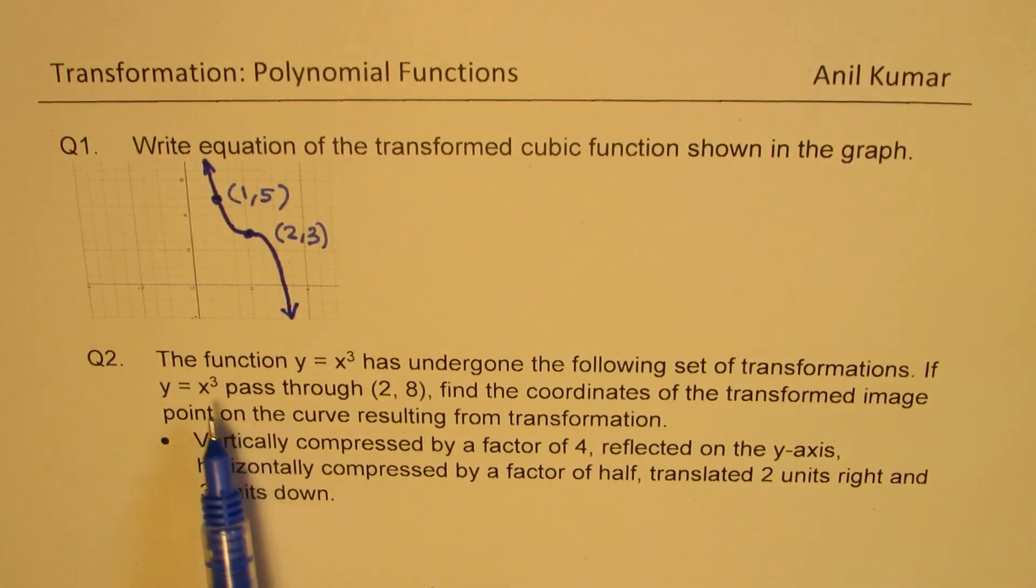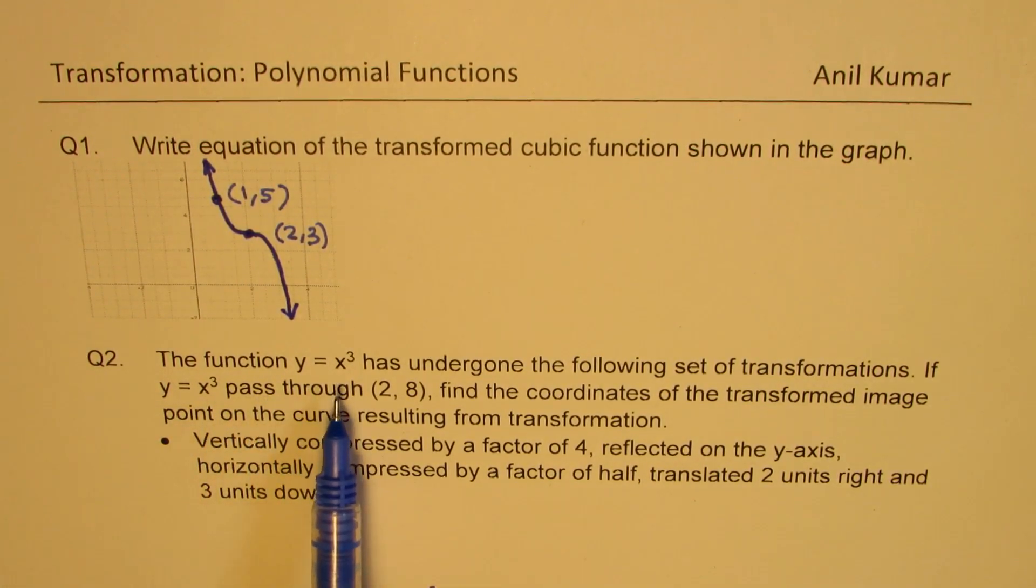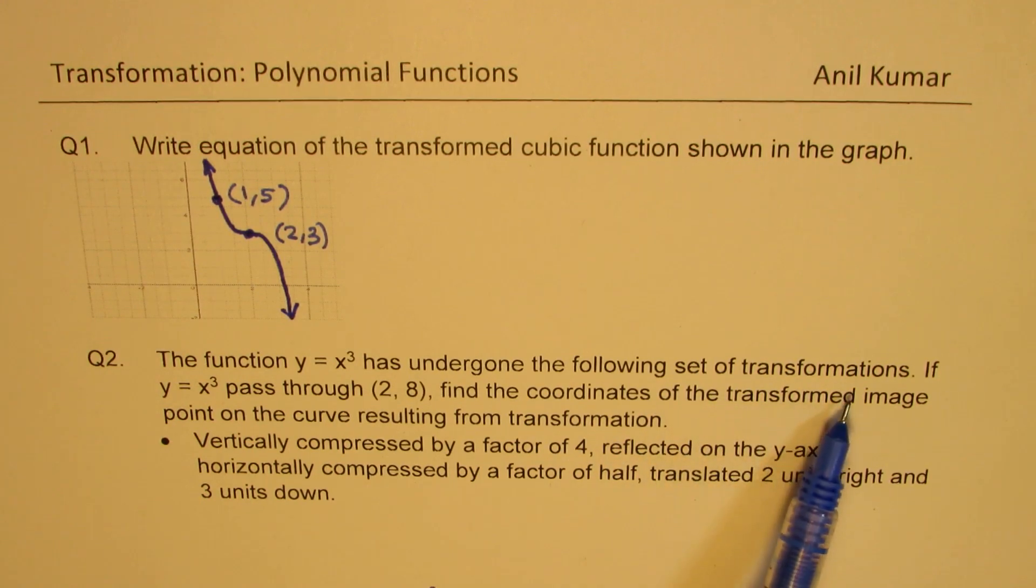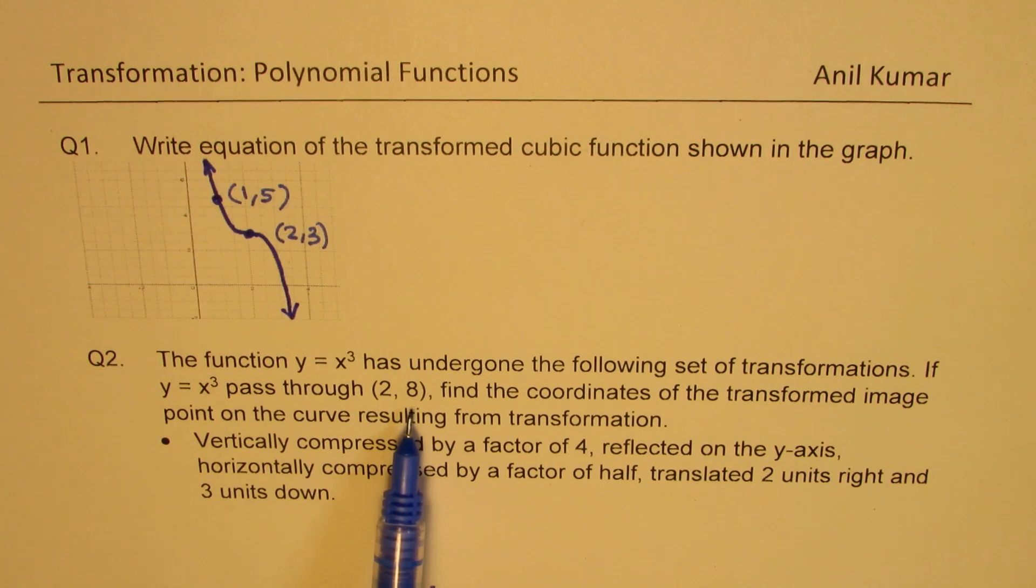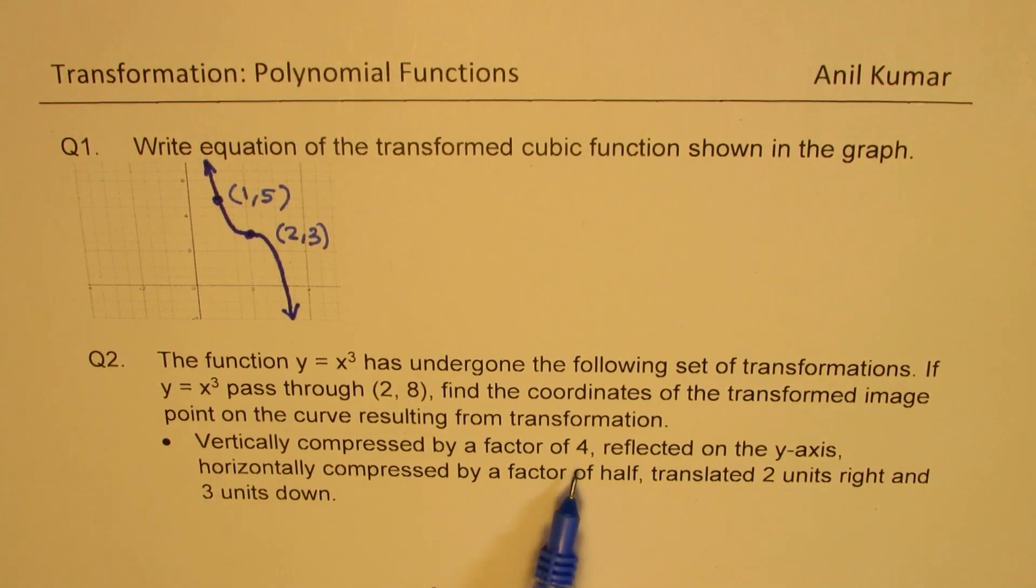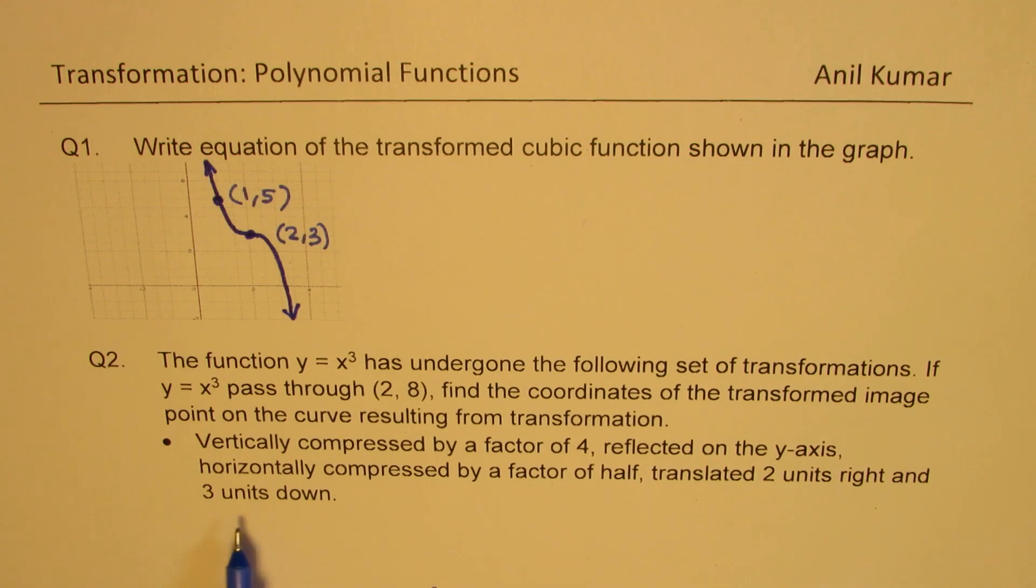Question number 2. The function y equals to x cube has undergone the following set of transformations. If y equals to x cube passes through 2, 8, find the coordinates of the transformed image point on the curve resulting from transformation. Vertically compressed by a factor of 4, reflected on the y-axis, horizontally compressed by a factor of half, translated two units right and three units down.